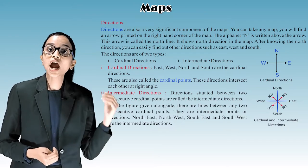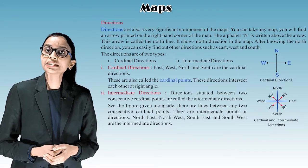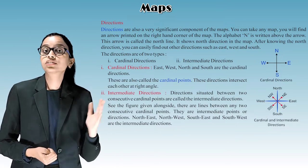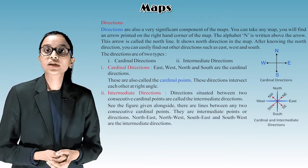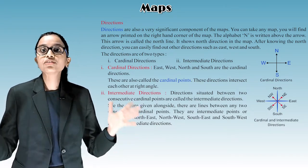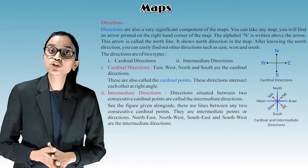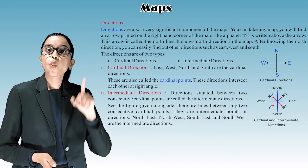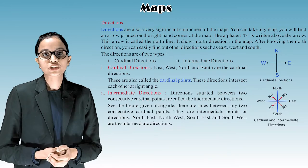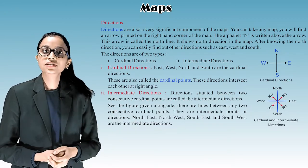Directions. Directions are also a very significant component of the maps. You can take any map. You will find an arrow printed on the right hand corner of the map. The alphabet N is written above the arrow. This arrow is called the north line. It shows north direction in the map. After knowing the north direction, you can easily find out other directions such as east, west and south. The directions are of two types. One is cardinal direction and the second one is intermediate direction.